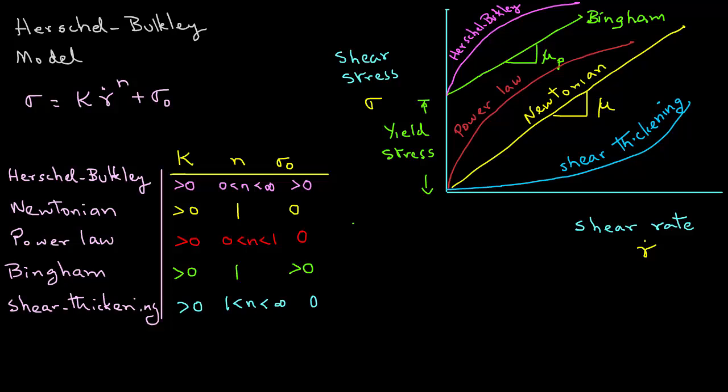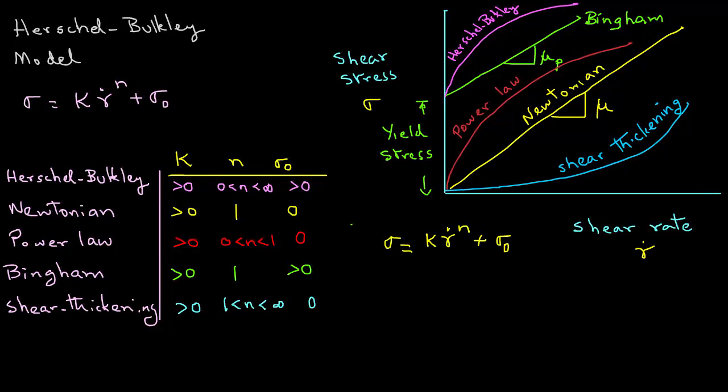You can substitute these values of k, n, and sigma zero in the Herschel-Berkeley model, and you can derive models for all the other types of liquids as we have seen in other modules.